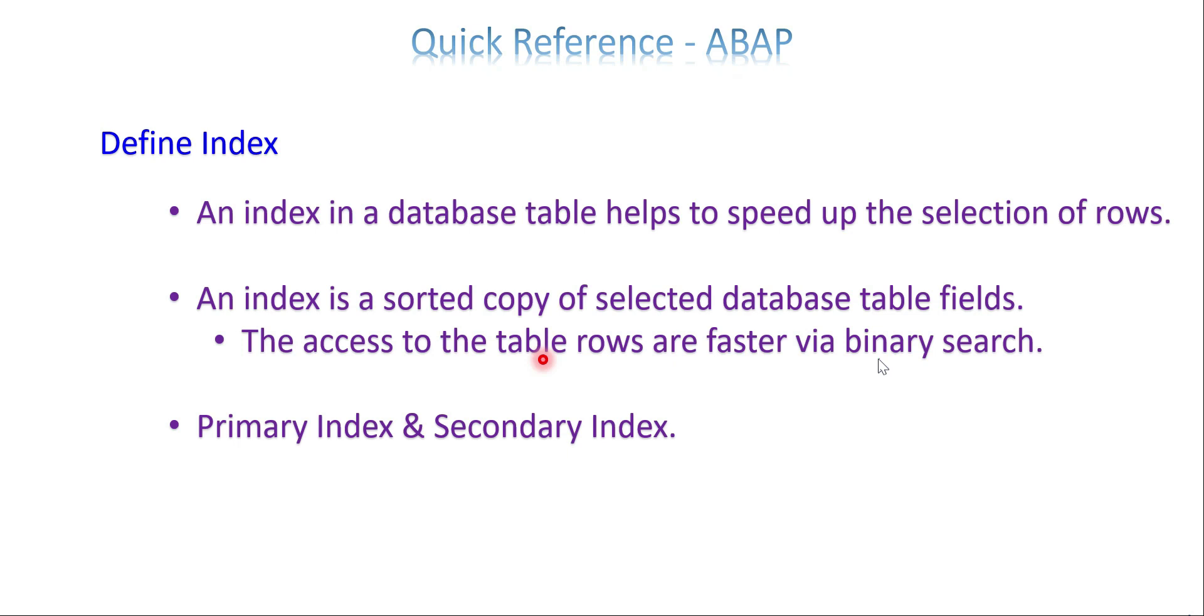The access to table rows is faster via binary search. If you use binary search with an index, it will be much faster. In a basic way, it increases performance through an index. There are two types: primary index and secondary index. In HANA, there's also full text index, but today we'll see only primary and secondary.